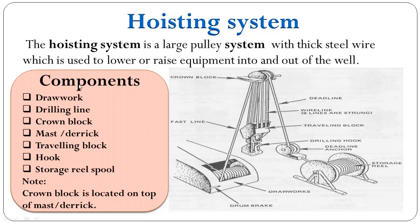The hoisting system components consist of: draw works, drilling line, crown block, mast or derrick, traveling block, hook, storage reel, and spool.